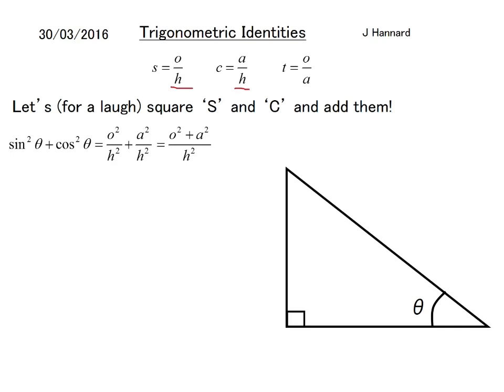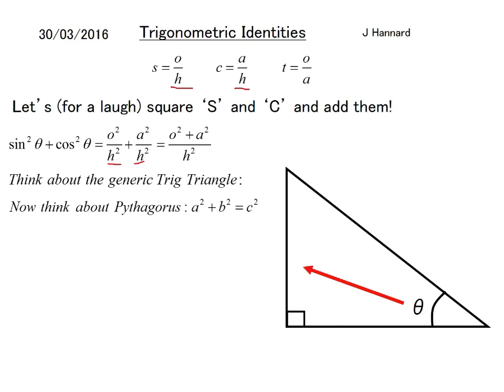We know through good fraction practice that if you have a common denominator of H, you can just put the addition on the top, so it'll be O squared add A squared, all over H squared. And what you do next is think about Pythagoras. Pythagoras said A squared add B squared equals C squared. So if we call the generic trig triangle, we've got the opposite, the hypotenuse, and the adjacent. We're going to call the adjacent A, we're going to call O, B, and we're going to call that C.